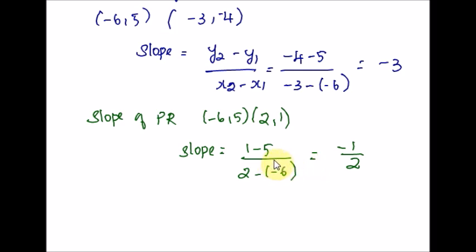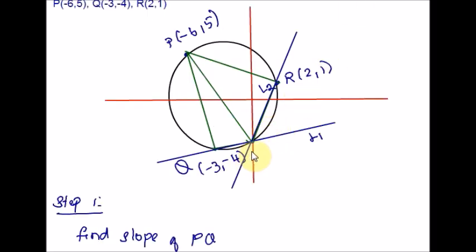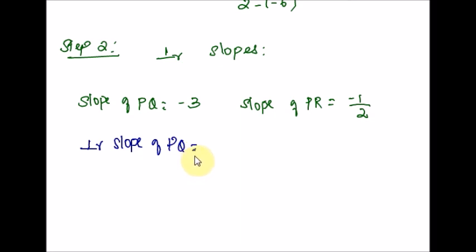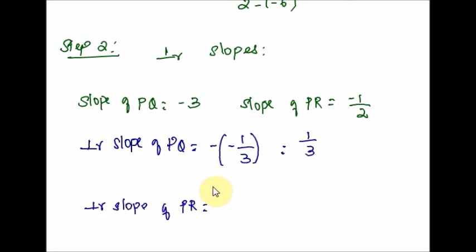From the figure, L1 is perpendicular to PQ and L2 is perpendicular to PR. Let S be the point where lines L1 and L2 meet. To find the perpendicular slopes, we take the negative inverse. The perpendicular slope of PQ is the negative inverse of negative 3, which is 1 over 3. The perpendicular slope of PR is the negative inverse of negative 1/2, which is negative times negative 2 = positive 2.